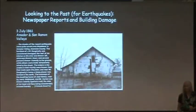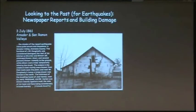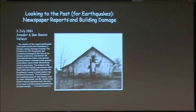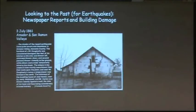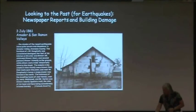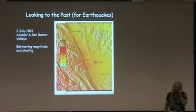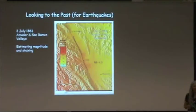We can look at buildings from the mid-1800s and the damage to them. Adobes were a good example — they got damaged every time there was an earthquake and were repaired or not. Newspaper reports were also helpful, though it's not always possible to find the original account. For the 1800s and early 1900s, we've been going back looking at reports — what did people see, what damage was present — in order to determine how big the earthquakes were, what the shaking was like, and what the magnitude was.